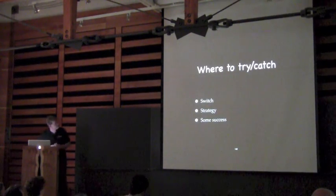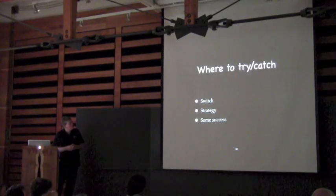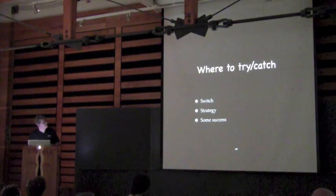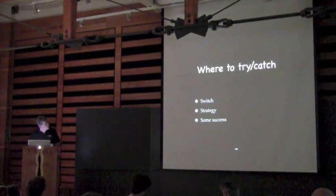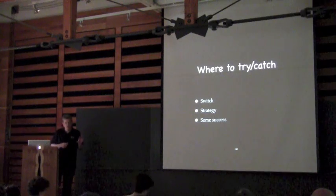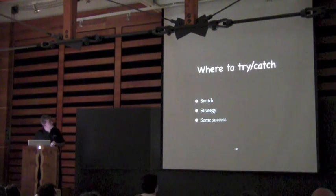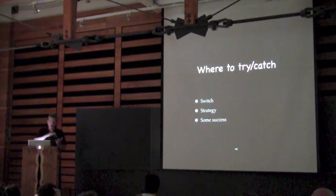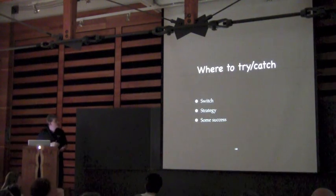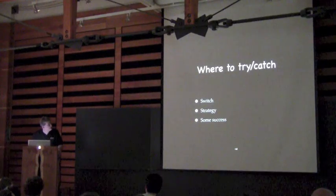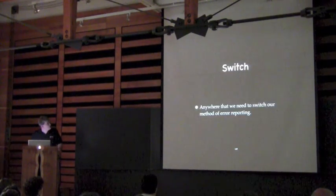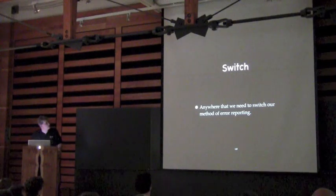So where do we want to try to catch? If we're going to be complete, we need to think about this. I have three areas where I think we need to put try blocks. The first is called 'switch' — this is anywhere we need to switch our method of error reporting. I'm a firm believer we should be using exceptions, but we can't use exceptions everywhere. There are places where we have to support the no-throw guarantee.